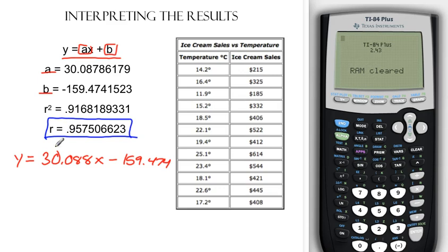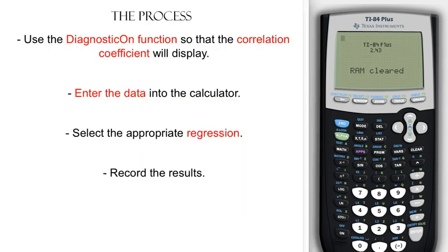So the bigger question is, how do we make our calculator give us that? And here are the four steps. First, we want to turn on the diagnostic function. Because if we don't, it won't give us the correlation coefficient. And that's half of what we're after. Then we have to enter the data into the calculator, and then we have to select the appropriate regression. In this case, we're looking for linear regression. And then we've got to record the results.